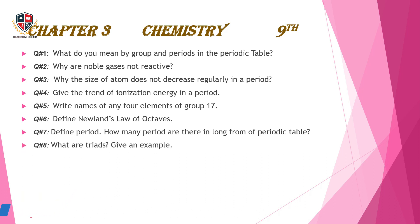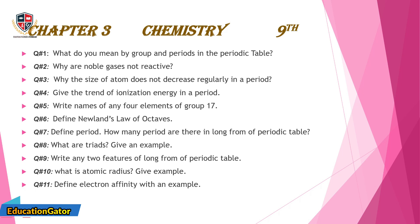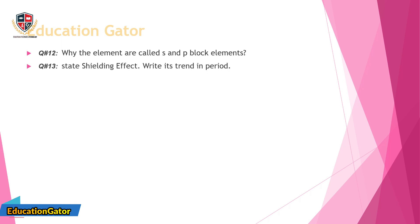Question 7: Define period. How many periods are there in the long form of the periodic table? Question 8: What are triads? Give an example. Question 9: Write any two features of the long form of the periodic table. Question 10: What is atomic radius? Give an example. Question 11: Define electron affinity with an example. Question 12: Why are the elements called S and P block elements?